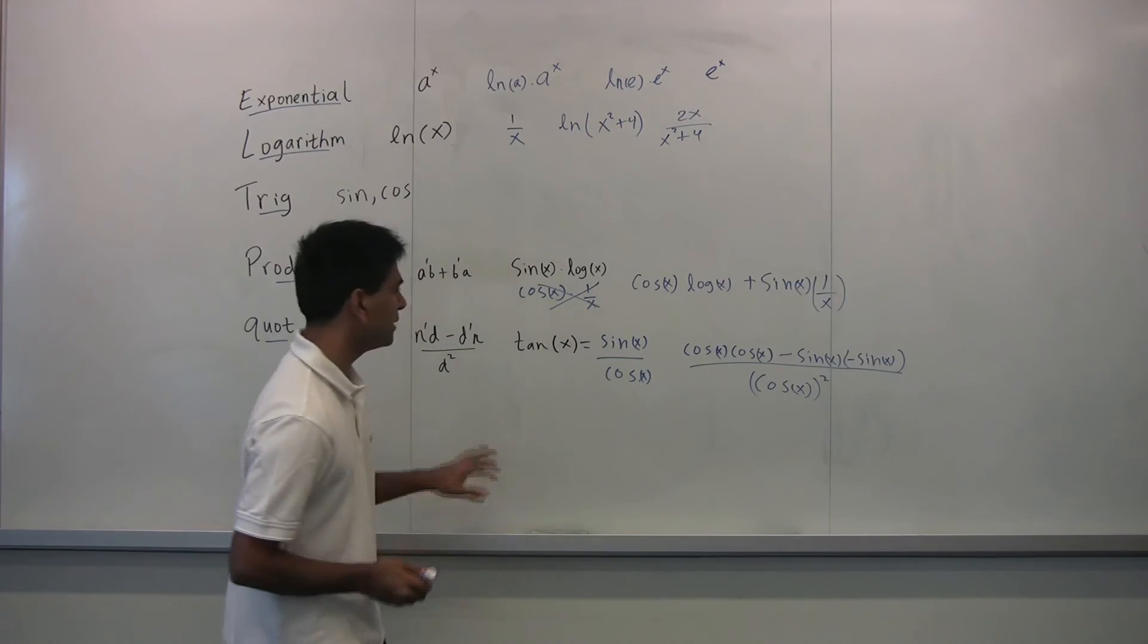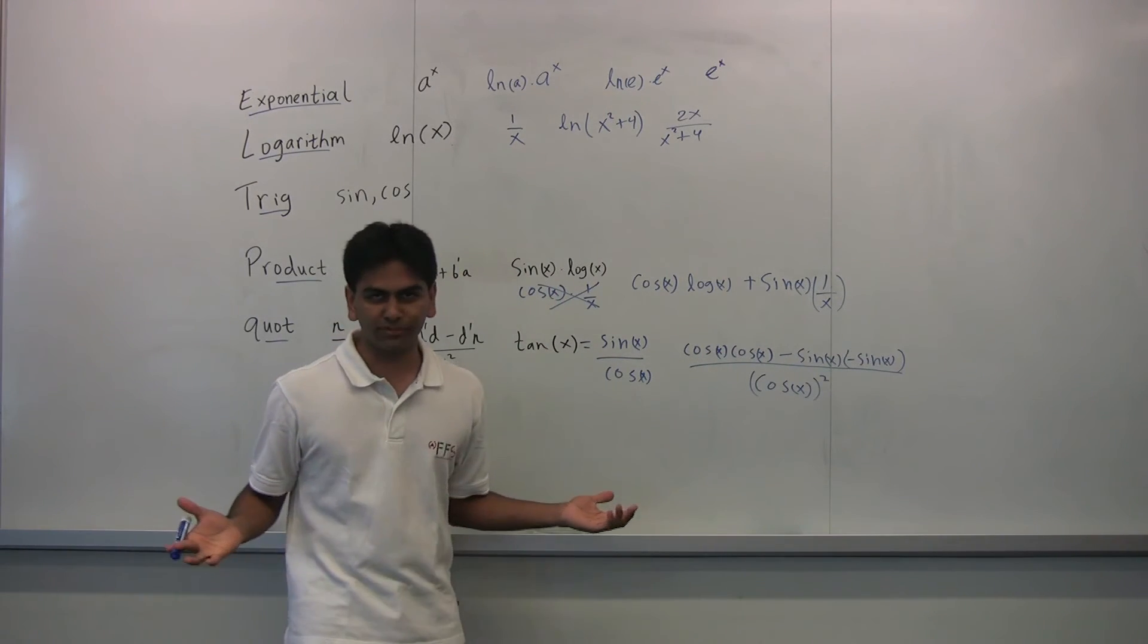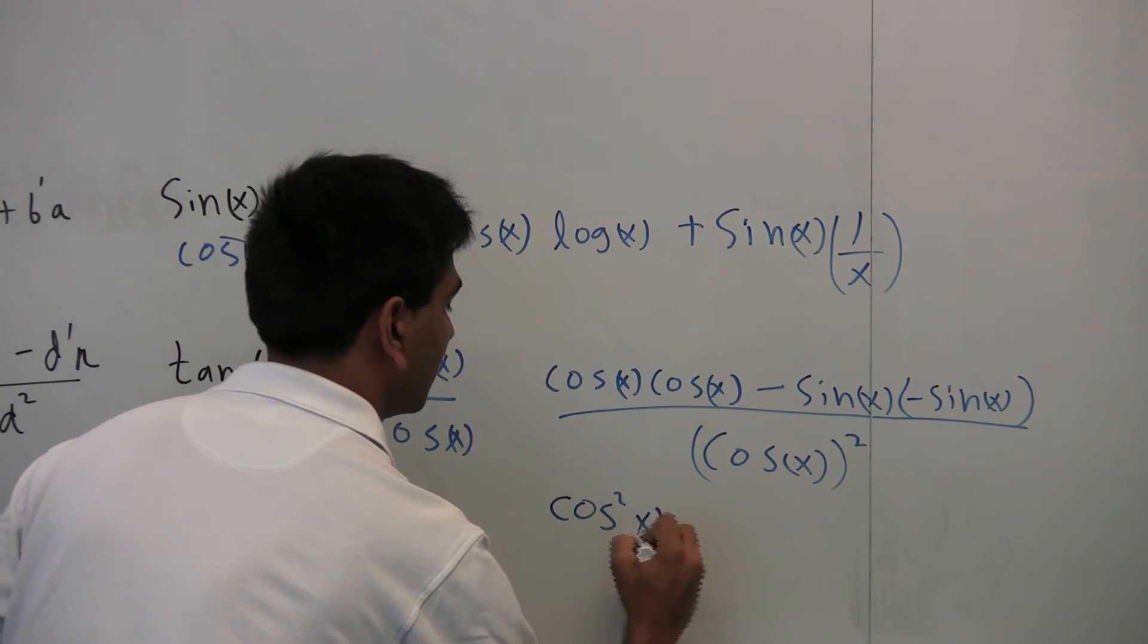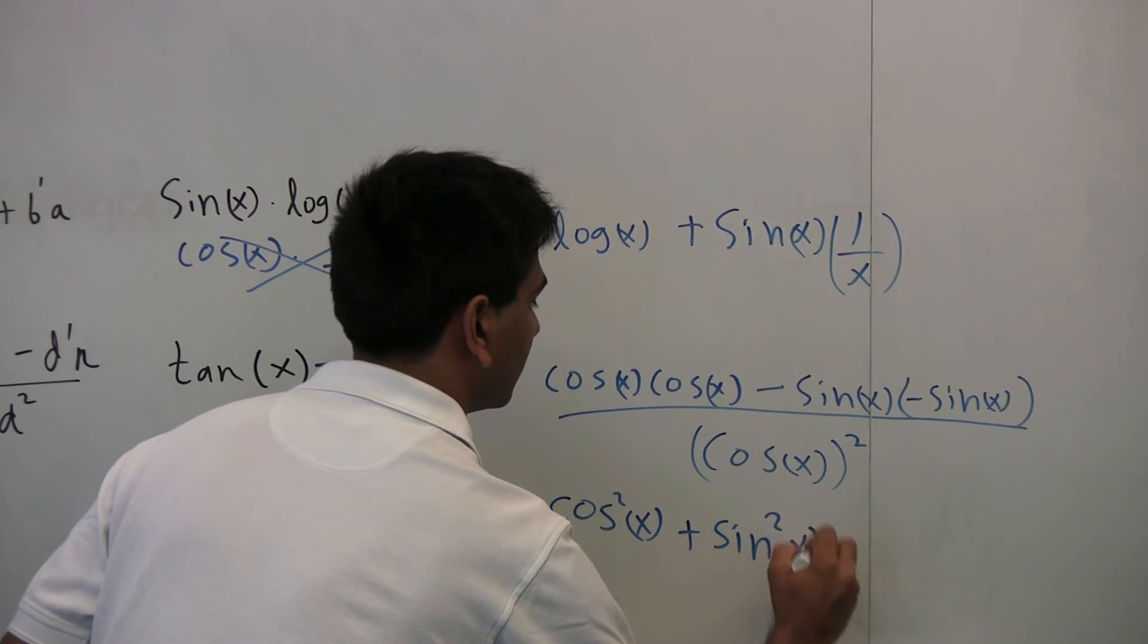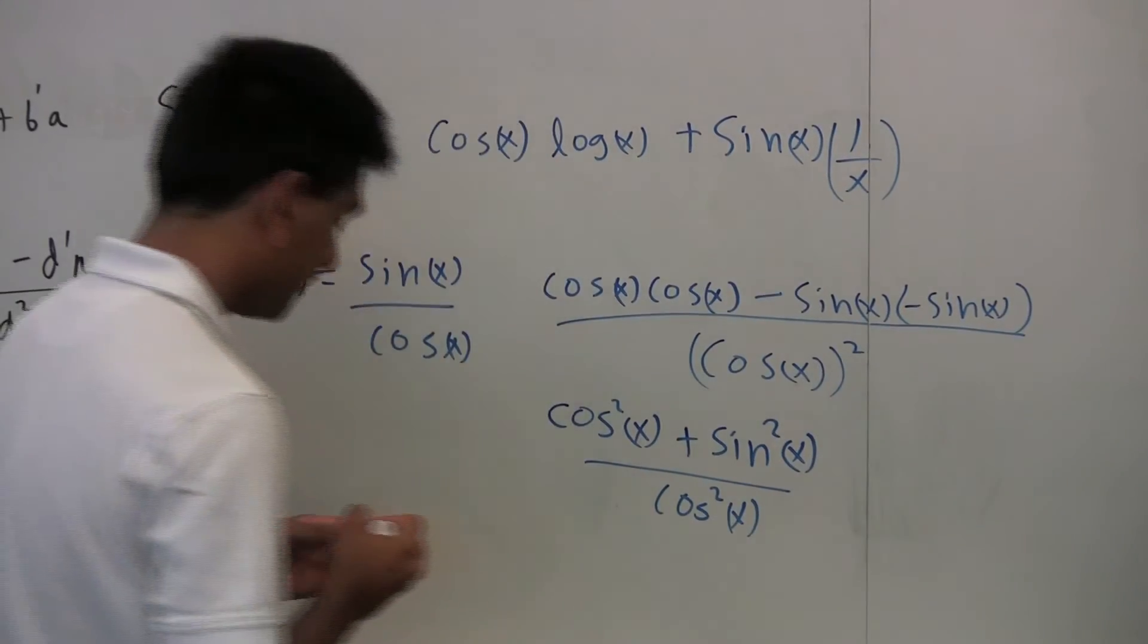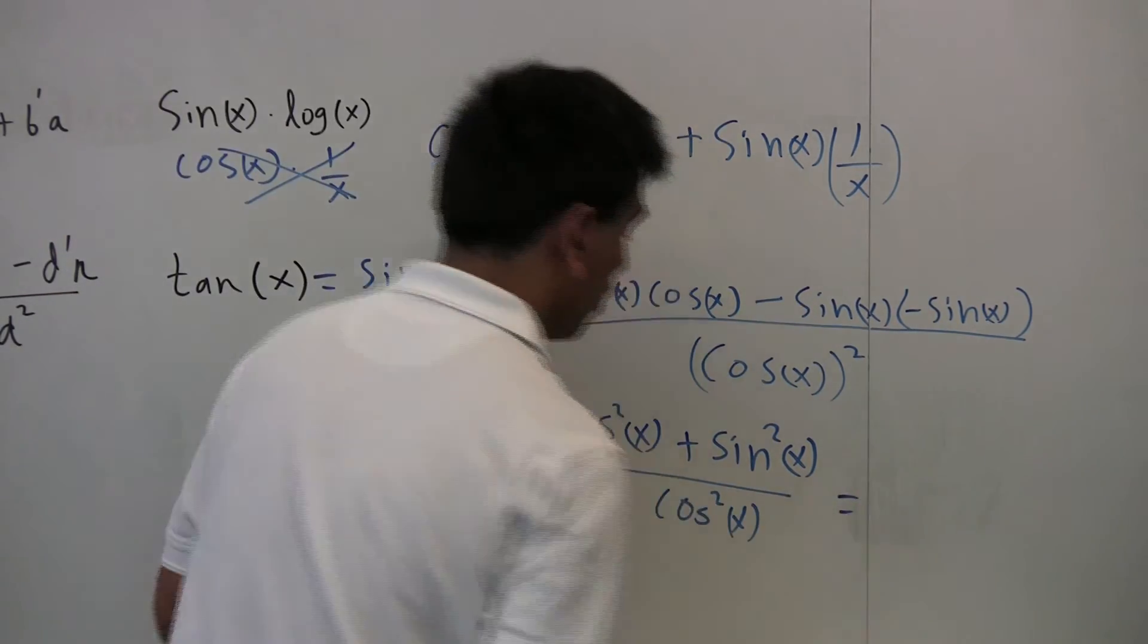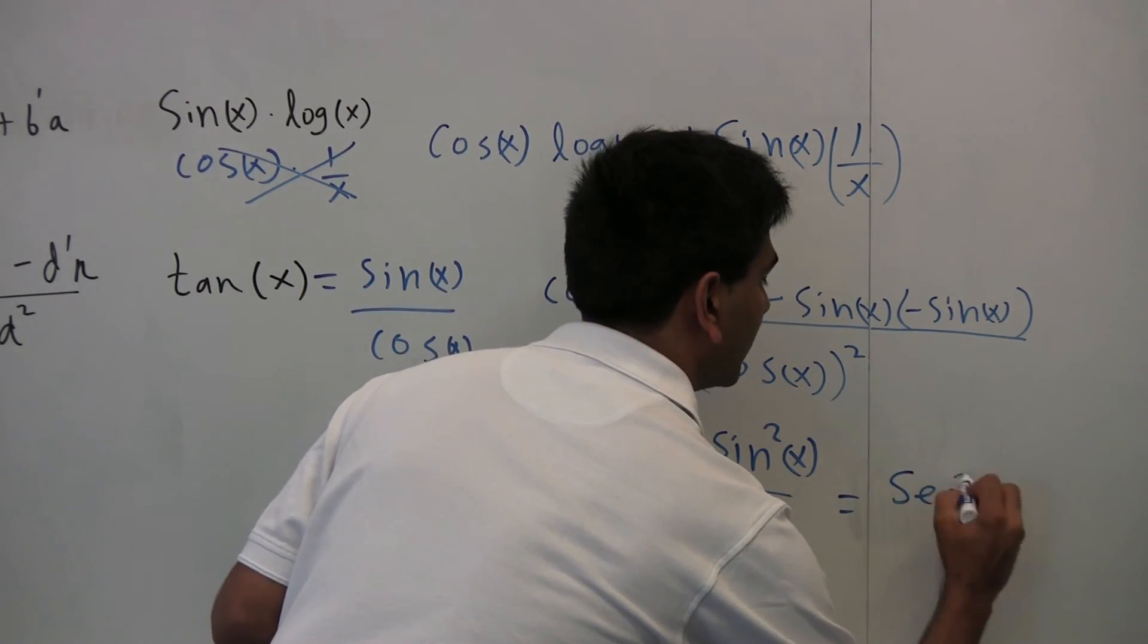Wow, I have to memorize this whole thing when someone asked me what the derivative of tan of x is. Not really. As we notice, this actually simplifies to cosine squared of x plus sine squared of x over cosine squared of x. And from basic trig rules, we know that cosine squared plus sine squared is one. So this actually becomes one over cosine squared x, which is in fact, secant squared x.